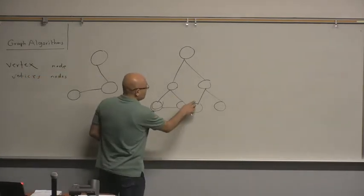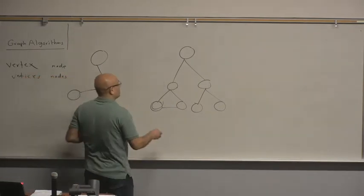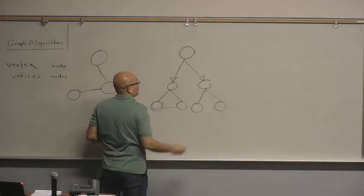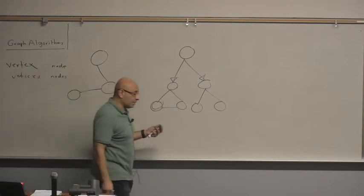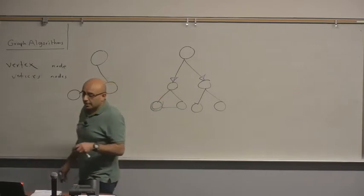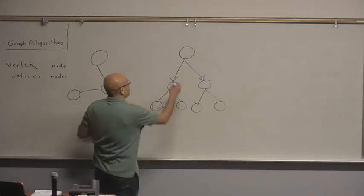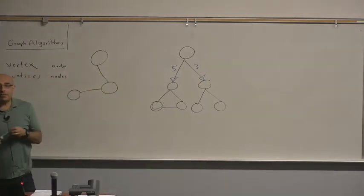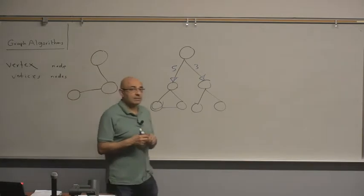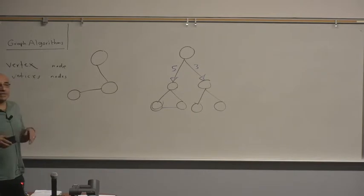The graph can be directed or undirected — there are directed graphs and undirected graphs — so these edges can have directions. And they could have weights. In some problems the edges have weights, and in other problems they do not. That depends on the problem we are trying to model or represent with that graph. Let's go through some examples of problems that we can represent using graphs.